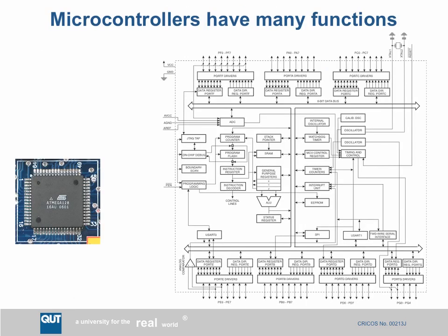Now, the microcontroller I mentioned — one that costs 20 cents in quantity — here's an example: a chip made by Atmel called the ATmega 128. Looking at the block diagram, it has many functional units. At the core is program flash memory, perhaps 64 kilobytes, which holds the program implementing the controller. It has SRAM, typically 4 or 8 kilobytes, to hold program variables. It also has EEPROM — maybe 256 bytes — which is non-volatile memory for configuration parameters that persists even when the chip is completely powered down.